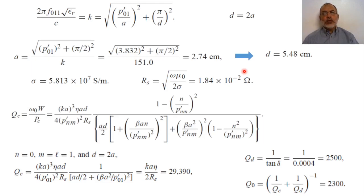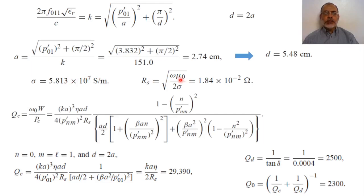Regarding the unloaded quality factor, we first calculate the surface resistance of the copper conductor. The conductivity of copper is σ = 5.813 × 10⁷ S/m. The surface resistance is Rs = √(ωμ₀ / 2σ), where ω = 2π f and μ₀ = 4π × 10⁻⁷ H/m. Computing this gives Rs = 1.84 × 10⁻² Ω.